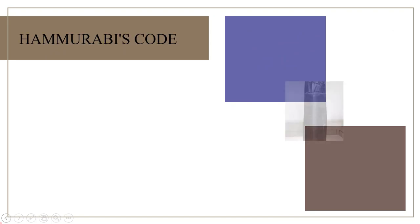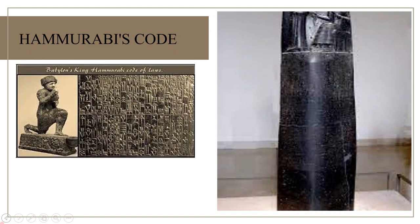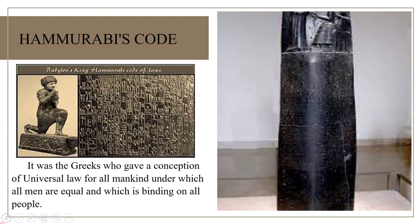Hammurabi's code is a large black stone about 2 meters high called a steli. It was discovered in 1901 by an Egyptologist in Iran, where another king had taken it in the 12th century BC. It has 252 different laws carved on it in the Akkadian language. The Greeks were the first proponents of natural laws, formulated by Greek thinkers, who gave a conception of universal law for all mankind under which all men are equal and binding on all people.